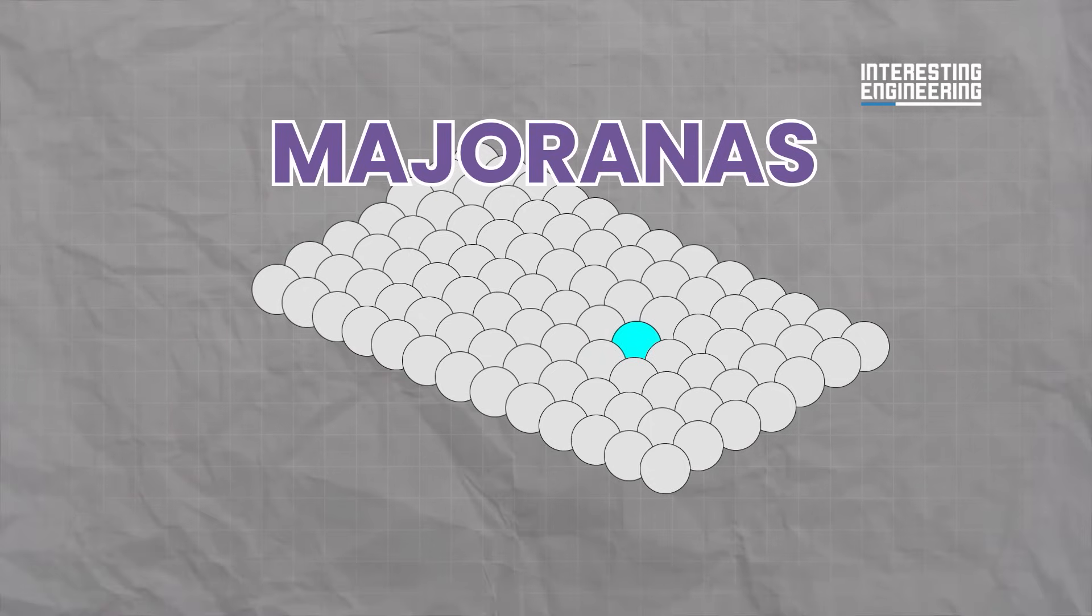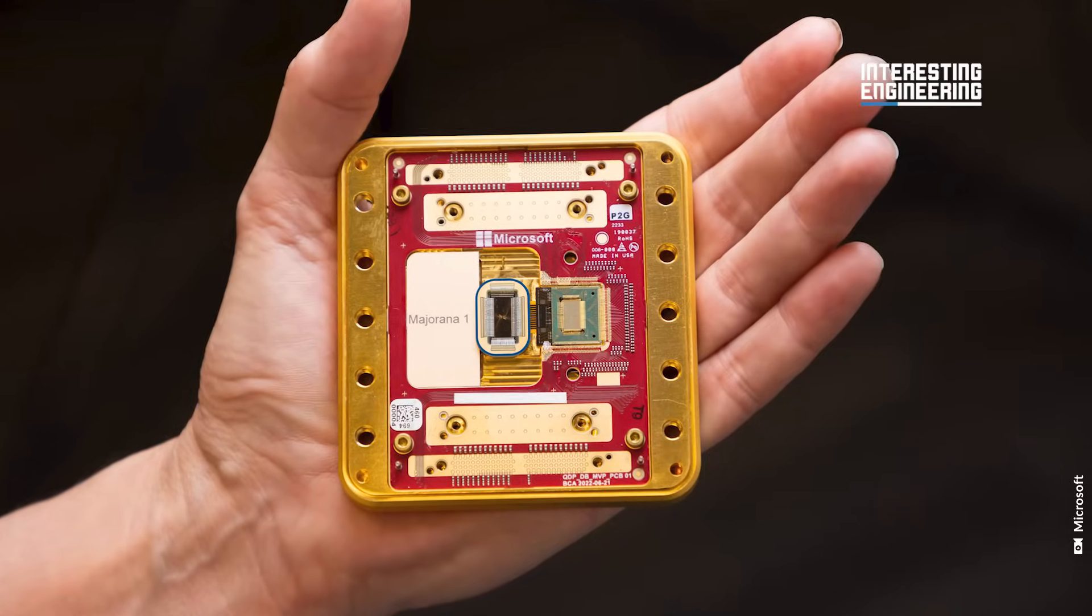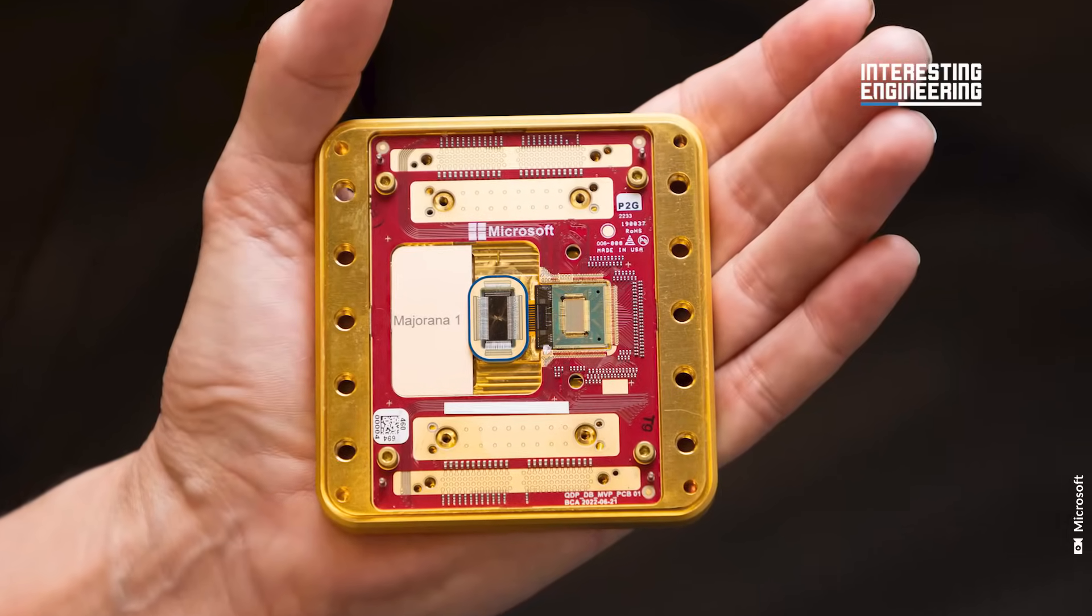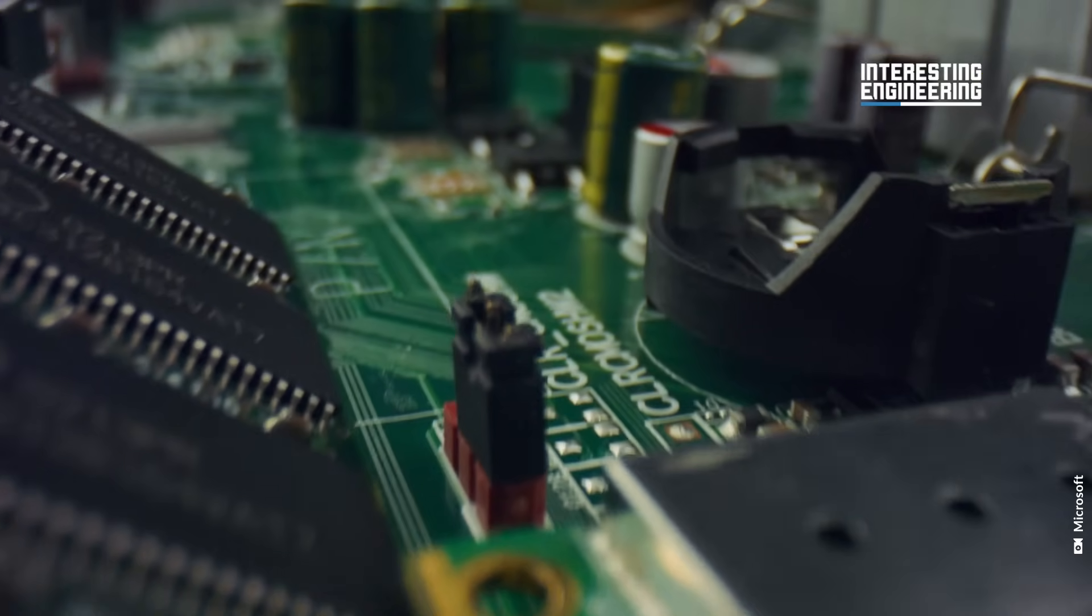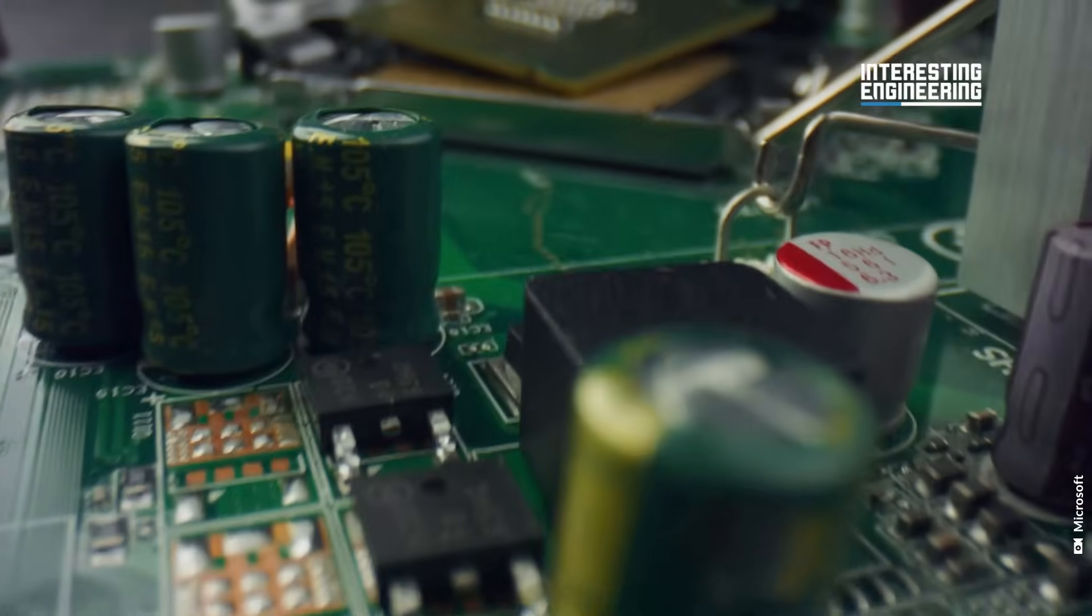This breakthrough builds on nearly two decades of research. Using topological core architecture, the Majorana 1 chip is compact enough to fit in the palm of a hand and currently supports eight topological qubits.